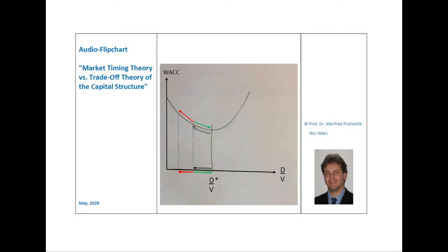The big question now is how do the managers react to this situation? According to the trade-off theory, the answer is pretty clear. The managers immediately have to make arrangements in order to reestablish the optimal capital structure — this is part of their job. In this particular situation, this would mean that they have to increase the debt ratio, shown by the green arrow on the flipchart. This could easily be done by borrowing money from the bank or by tapping the bond market and using this money to buy back their own shares. This would restore the original capital structure and bring back the WACC to the original minimum value, as shown in green.